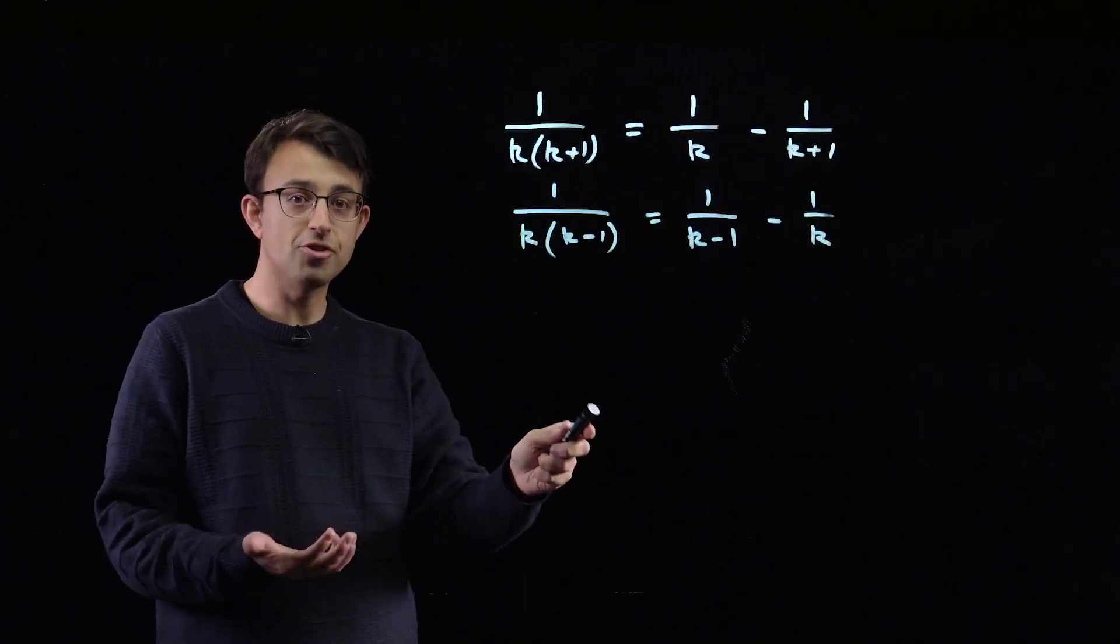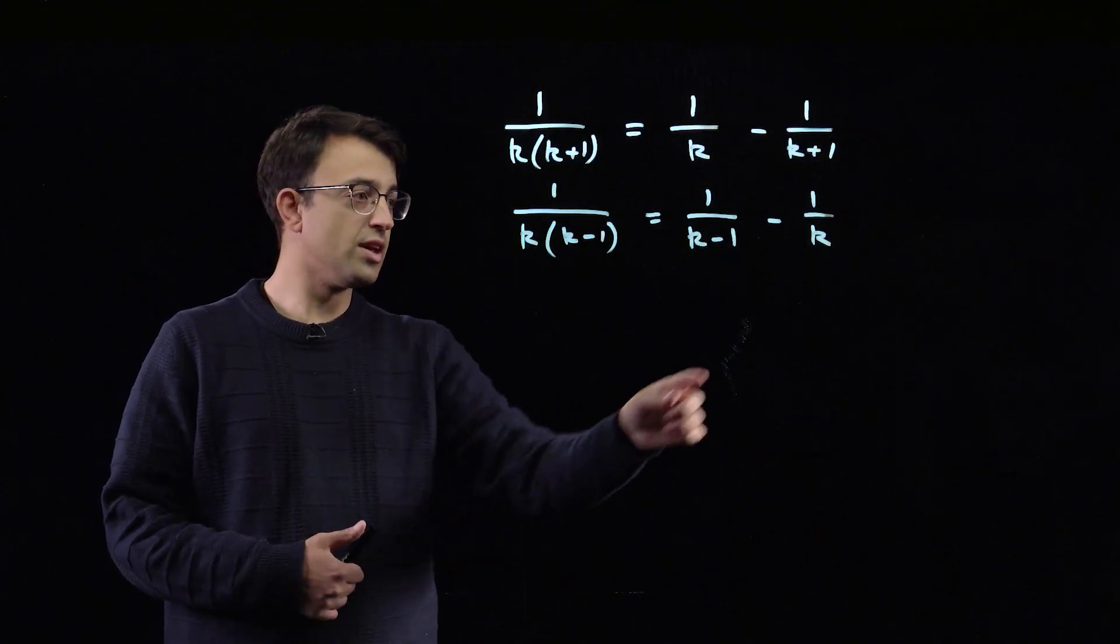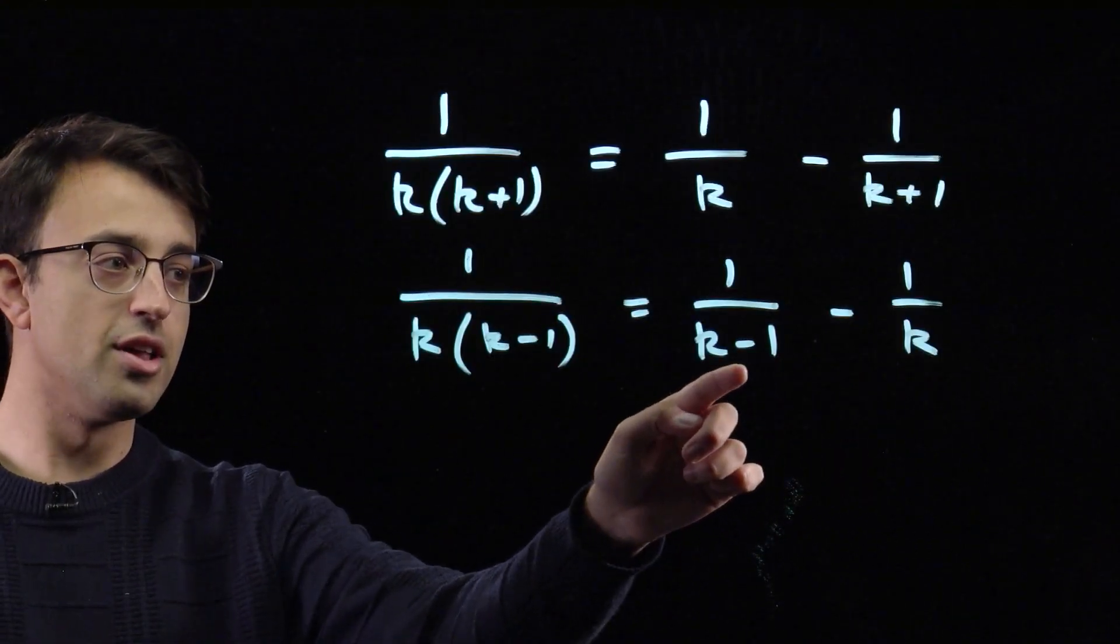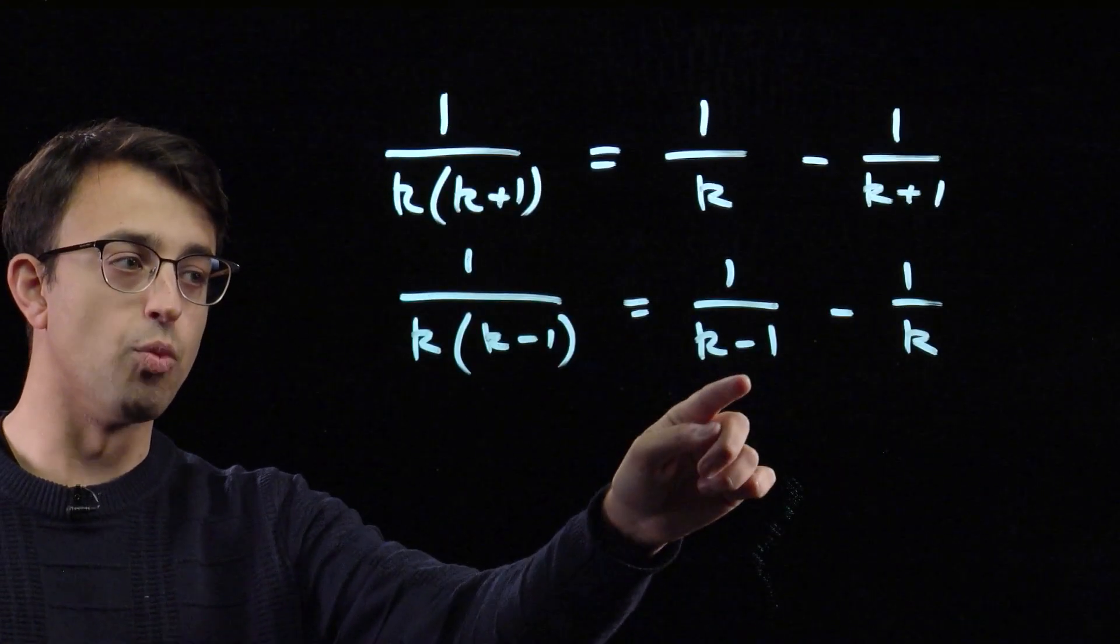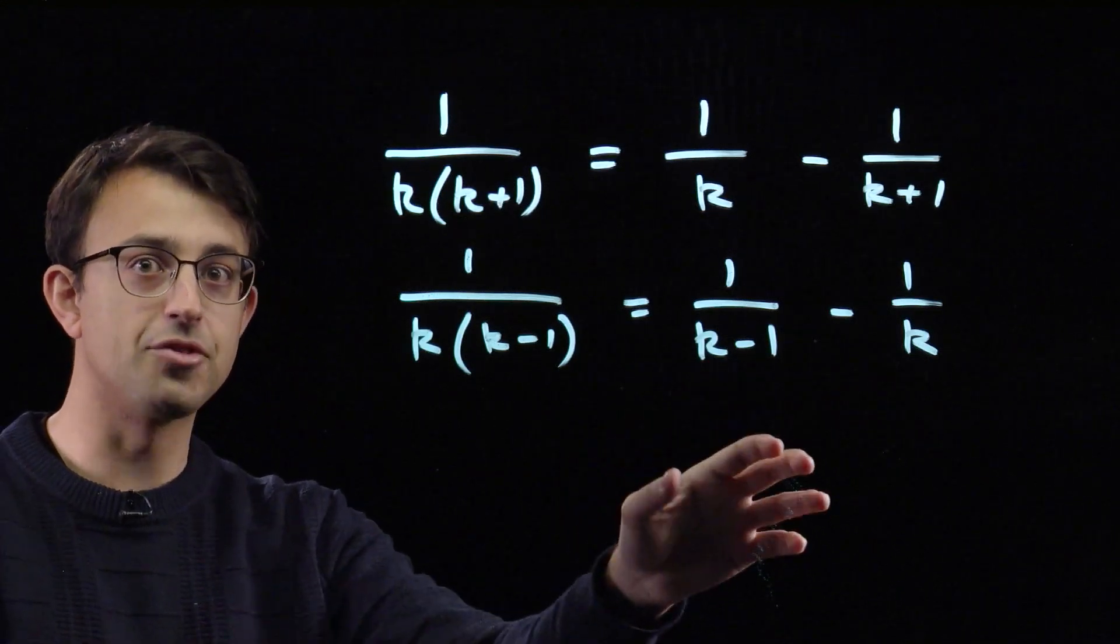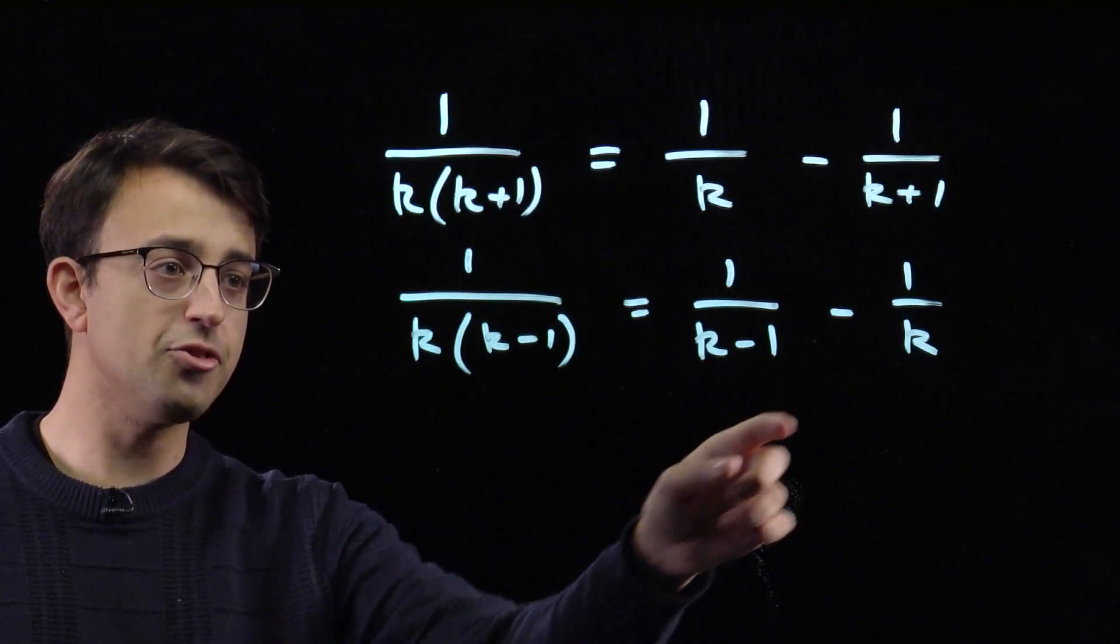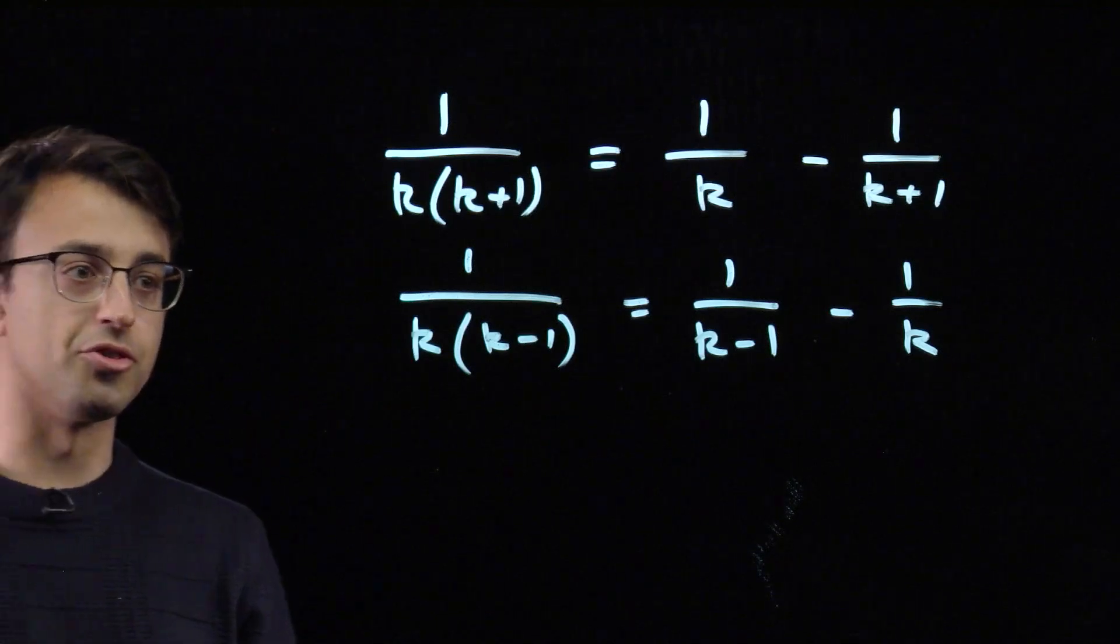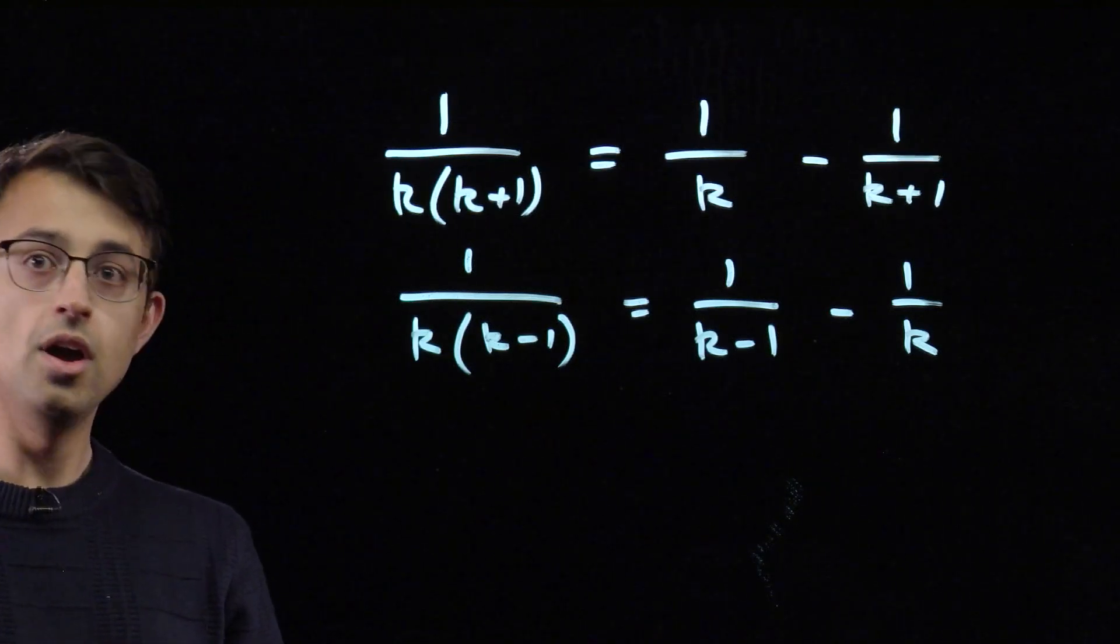As a sanity check, let's just check we've got this the right way around. k is larger than k minus 1, so 1 over k minus 1, the reciprocal, is larger than 1 over k. So we have done this right. When we subtract it this way, we do end up with a positive number.